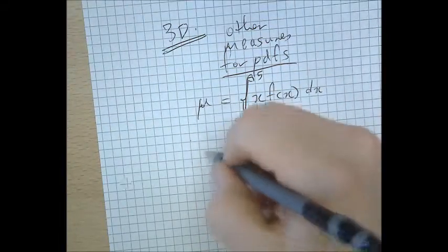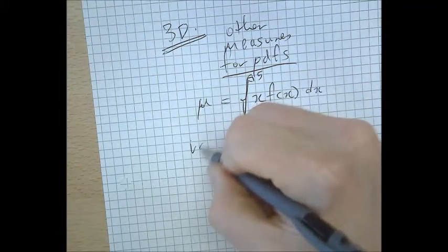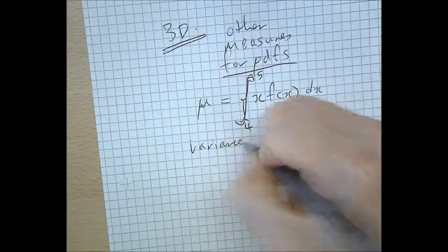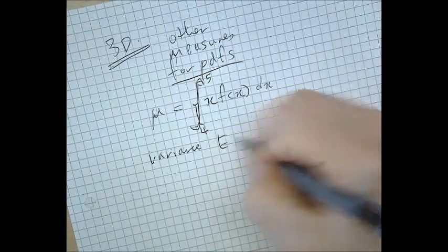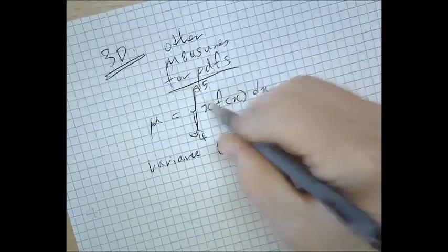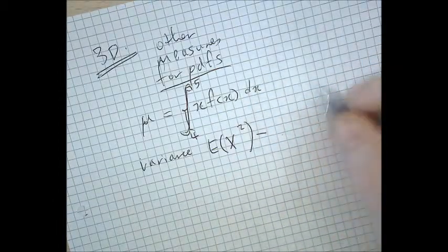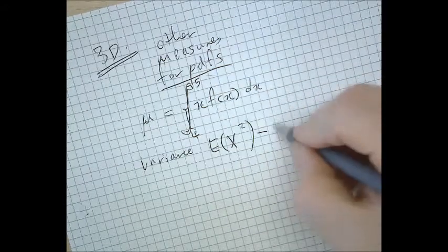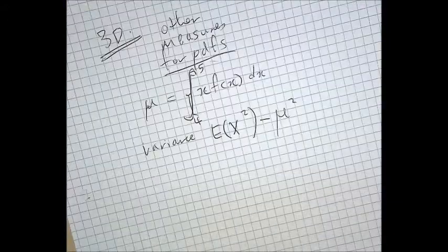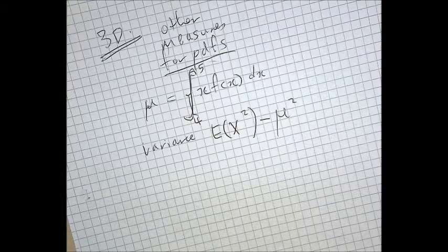Remember for the variance, it's do that business with an x squared instead of the x and then subtract the square of the mean. But what about some other measures?